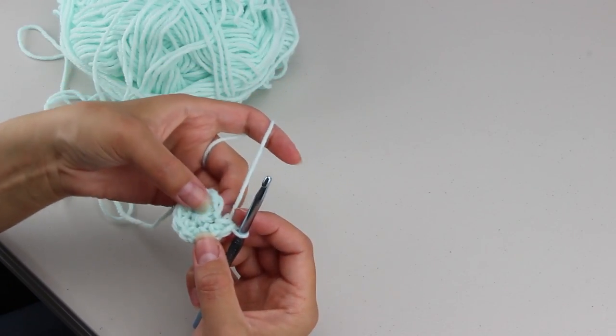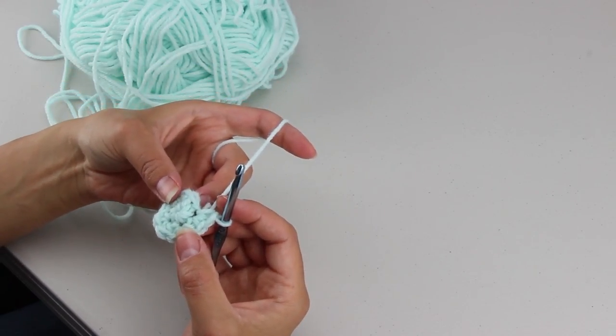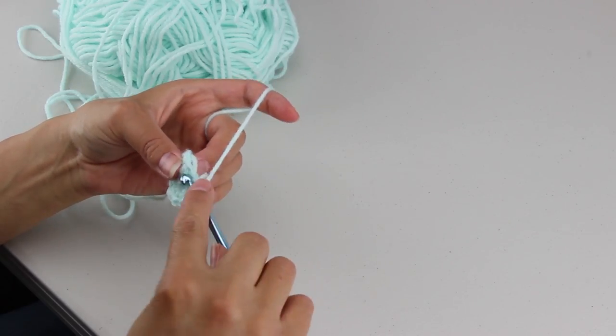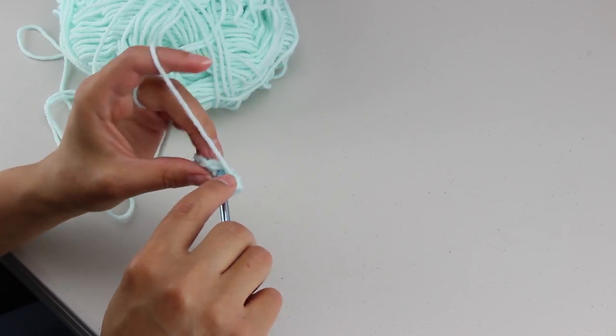I'm back at the beginning and I have 10 single crochets. So now what I need to do is I need to do 2 single crochets in the first stitch of the previous round.